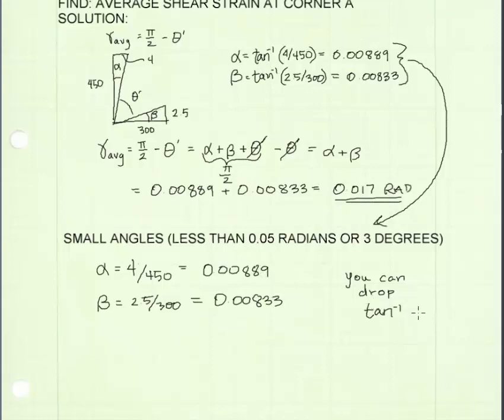So that's great news. We can drop the tangent inverse in this problem. This is useful because now you don't need to worry about converting your calculator from degrees mode to radians mode. Now keep in mind, the small angle rule which allows us to drop the trigonometric sign only works for radians. And now we're done.